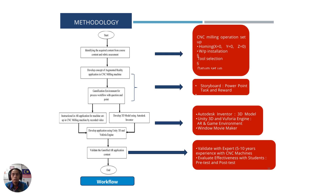This is the methodology to develop the gamified augmented reality. We start by identifying the content of the AR, selecting several operations such as homing position, workpiece installation, tool selection, data setup, and tool length offset. We then developed the concept of augmented reality in CNC milling machine with a gamified environment for the process workflow, with questions and points given. We recorded video instructions on how to operate the machine, and developed a 3D model using Autodesk Inventor for machine simulation. We then embedded the recorded video and simulation together using Unity 3D as the engine. Once development was complete, we validated the content and application by experts.